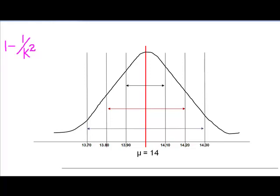When we use Chebyshev's theorem, we're going to use this formula right here. 1 minus 1 over k squared is going to give us the percentage of our data that falls plus or minus k standard deviations from the mean.